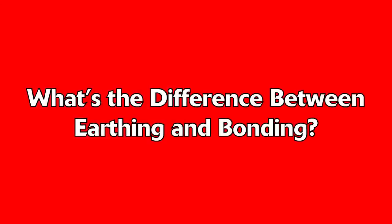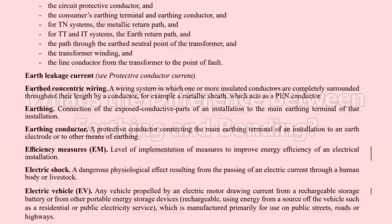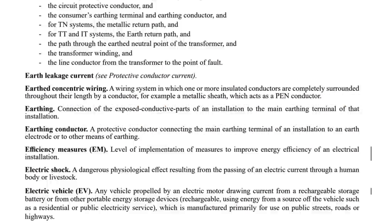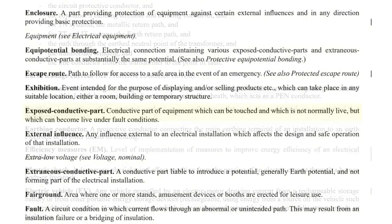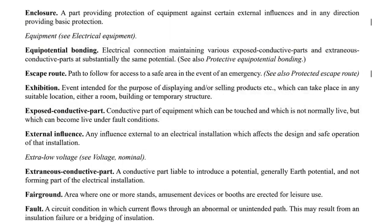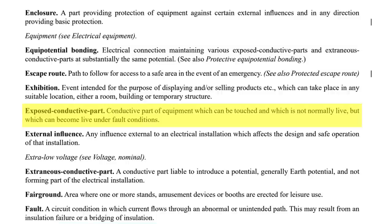So first let's have a look at earthing. If we look in part two of BS7671, we can see that earthing is defined as connection of the exposed conductive parts of an installation to the main earthing terminal of that installation. Exposed conductive parts are defined as a conductive part of equipment which can be touched and which is not normally live but which can become live under fault conditions.